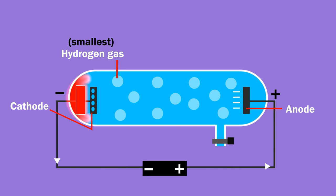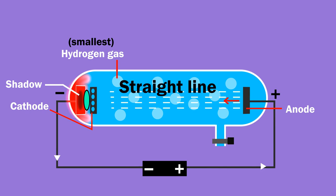Goldstein performed following extra experiments to confirm different properties of anode rays. He placed an object between cathode and screen and observed the shadow of it on the screen. This proved that anode rays travel in straight line.